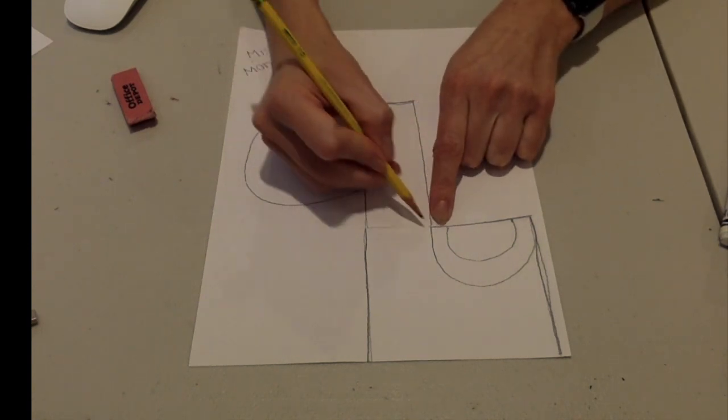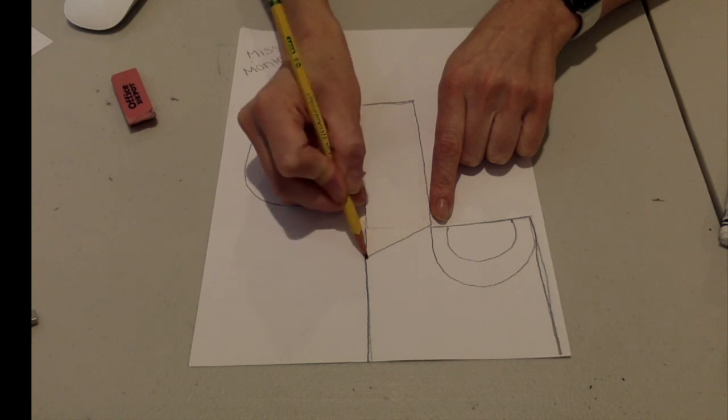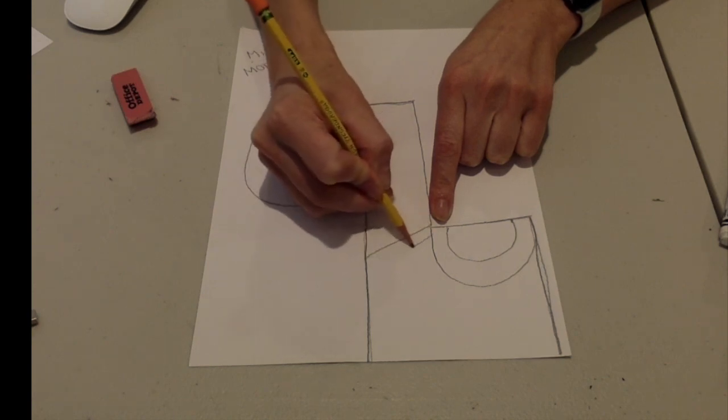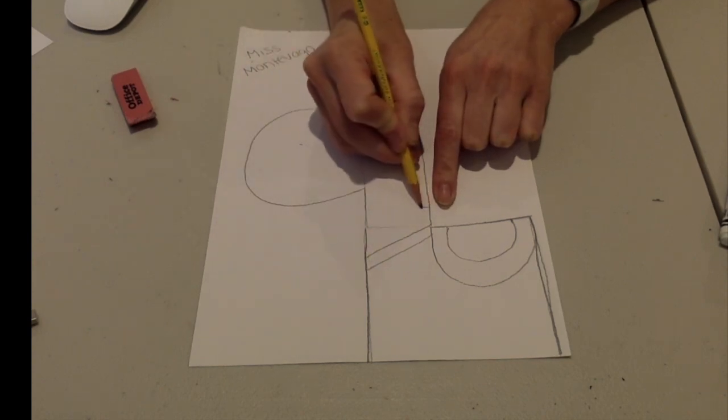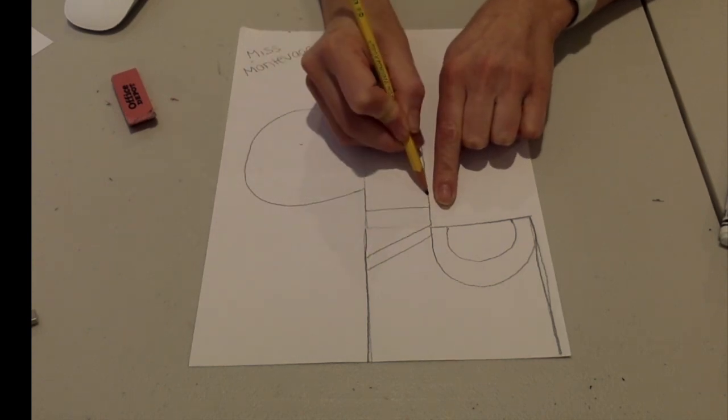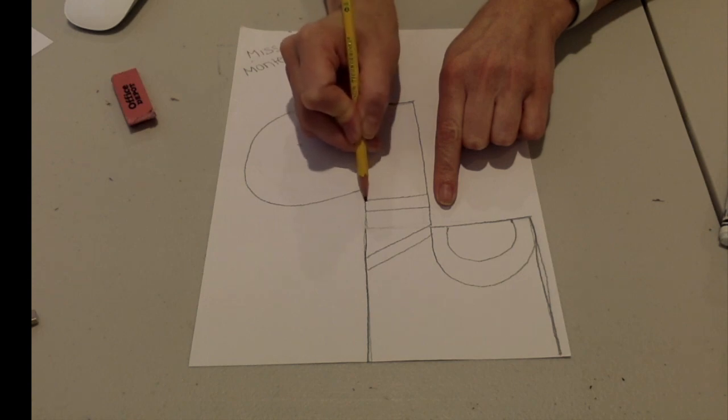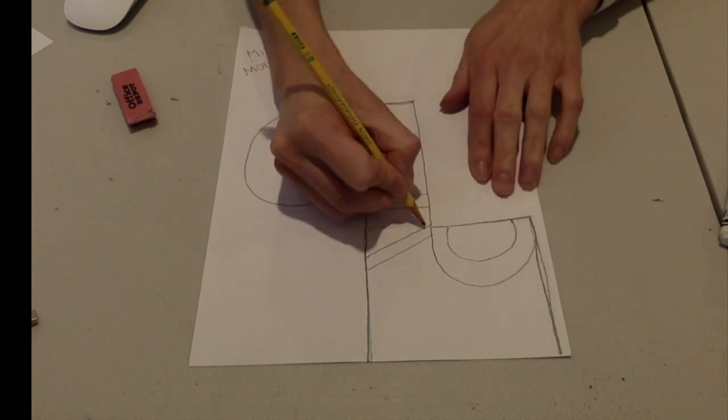Now, starting from that corner again, I'm going to draw a diagonal line down and another one that is parallel below it. I'm going to do the same above, but this time it's not diagonal, it's just straight across, but those two lines are parallel.